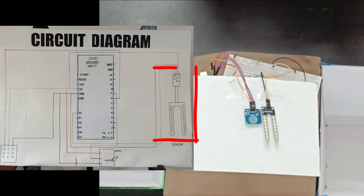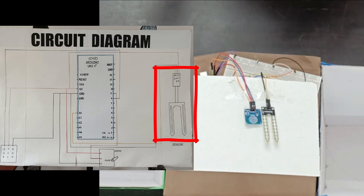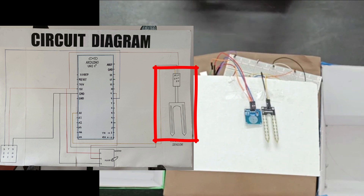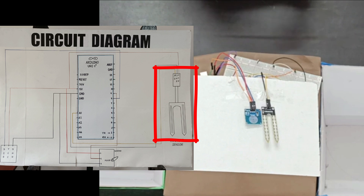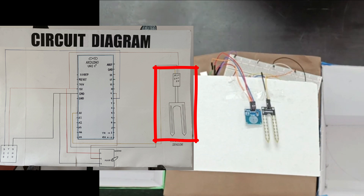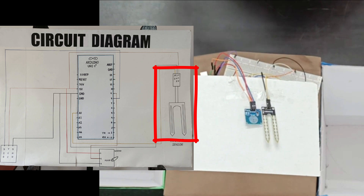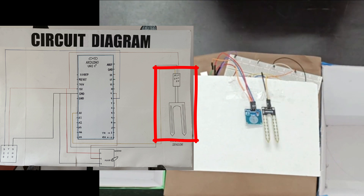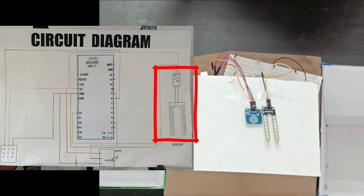The moisture sensor will detect the moisture value of the substance and give an output value between 0 and 1023, where 0 means completely wet and 1023 means completely dry. If the moisture value of the substance is lower than 1000, it will be classified as wet waste, and if it is greater than 1000, it will be classified as dry waste.